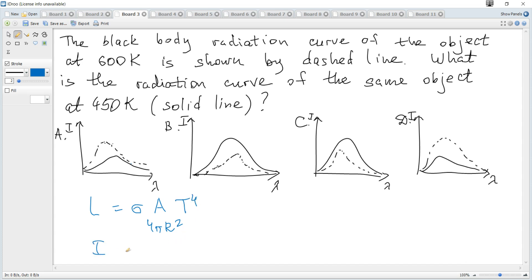Intensity is luminosity per unit area, or energy per second per unit area. It's some constant times temperature to the power of 4. Peak wavelength or lambda of maximum intensity multiplied by temperature is constant, so it's inversely proportional to temperature.